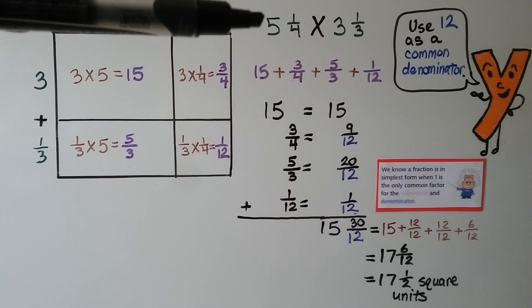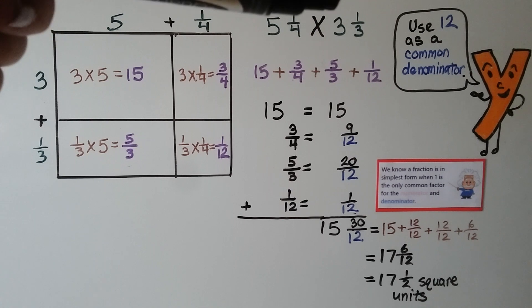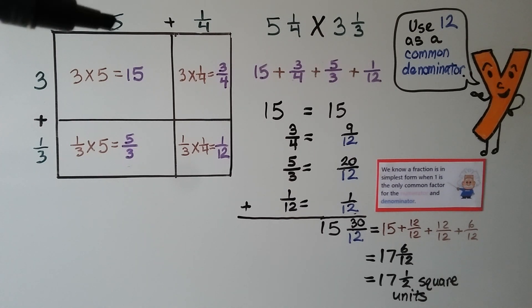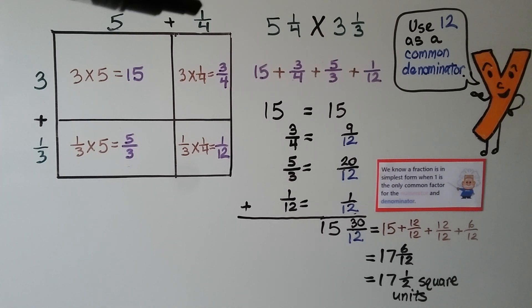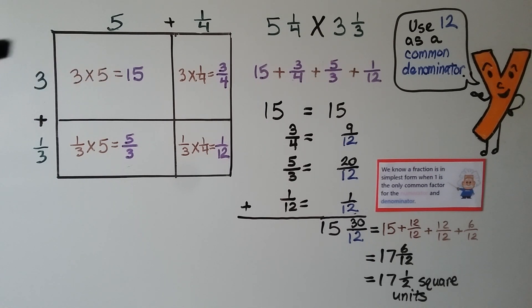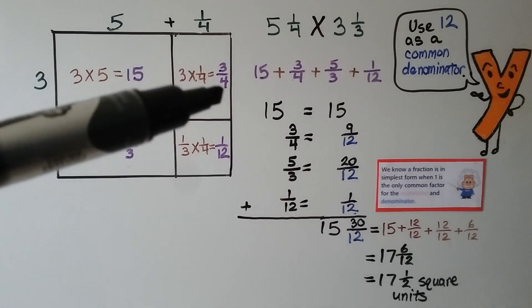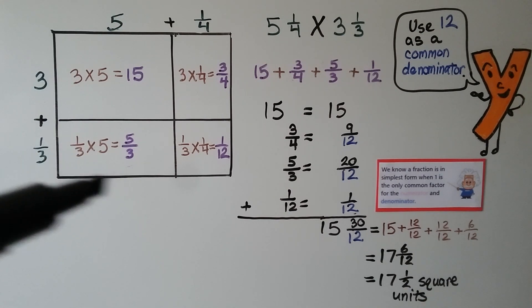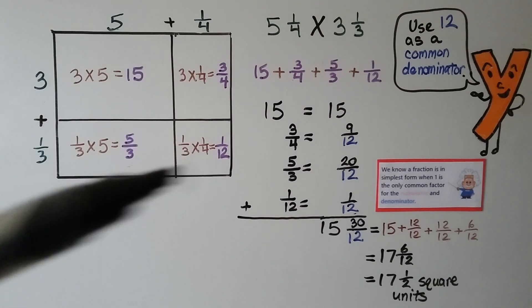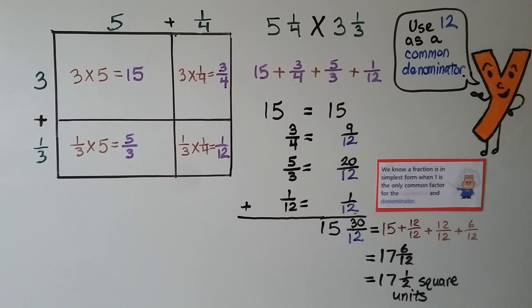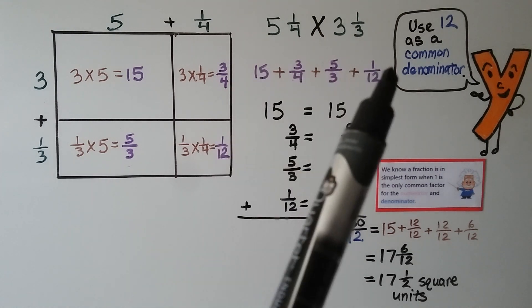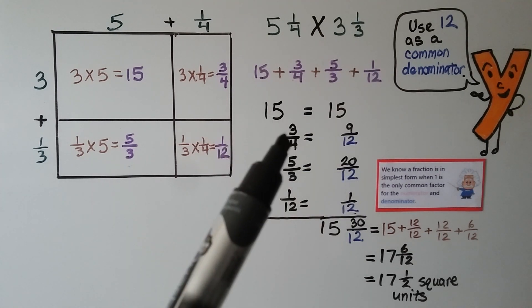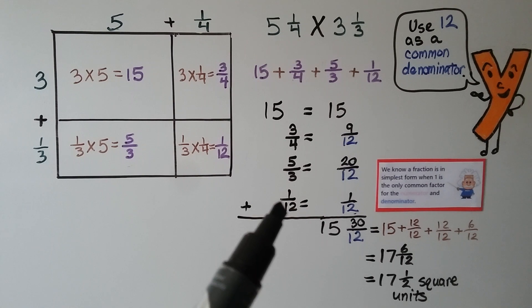Here we need to multiply five and one fourth times three and one third. We break five and one fourth into a five plus a one fourth, and three and one third into a three plus a one third. We multiply: three times five is fifteen, three times one fourth is three fourths, one third times five is five thirds, and one third times one fourth is one twelfth. Now we add these partial products: fifteen, three fourths, five thirds, and one twelfth.